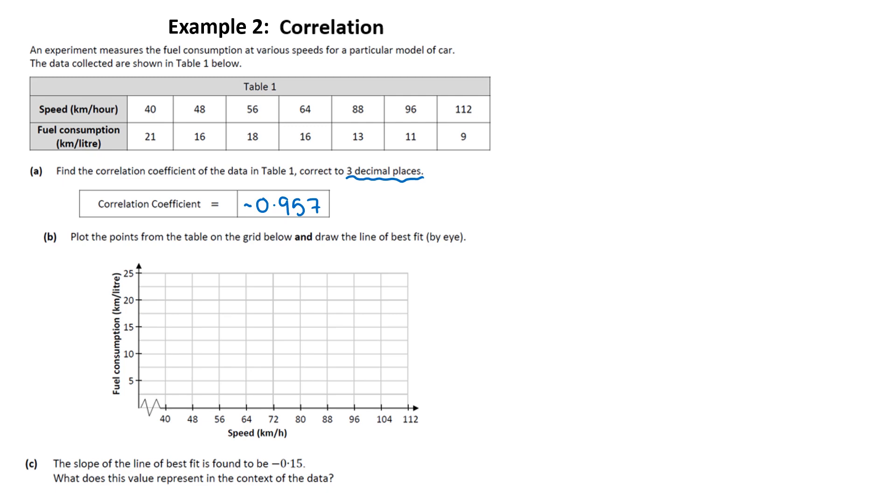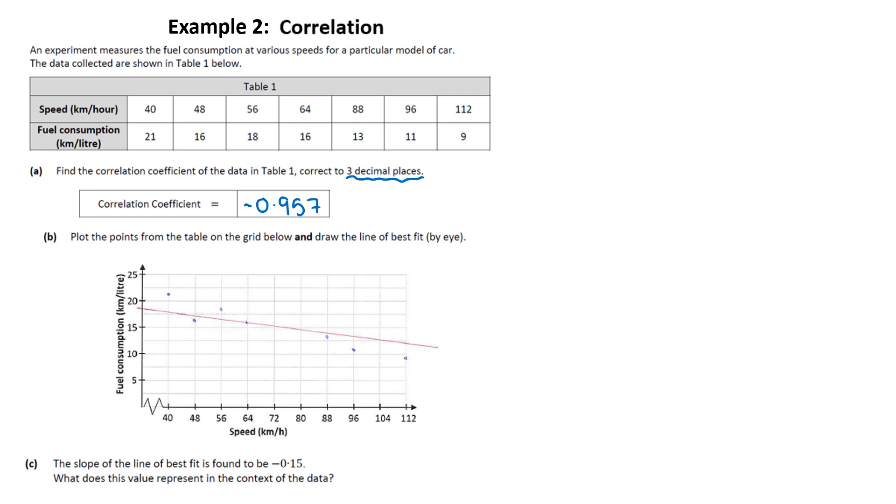So part B is plot the points from the table on the grid below and draw the line of best fit by eye. So it should look something like this. And for the line of best fit, it's not the line that goes through the most points, but it's the line that fits the data the best. So you want to try and have it so that you have the same number of points going through above and below. So what I was trying to do, and I think I slightly misfit my ruler was, so there's two above and four below. But actually if we could have moved that slightly down, we could have caught another point. You're not going to be marked very harshly on this. All they're looking is, do you get the sense of what the line of best fit is?